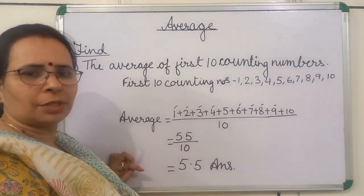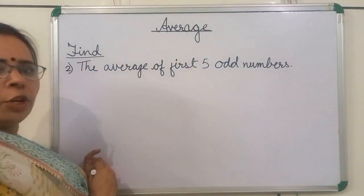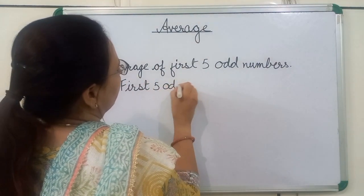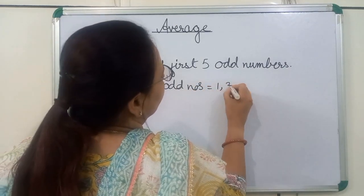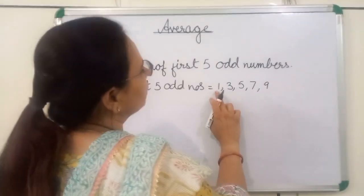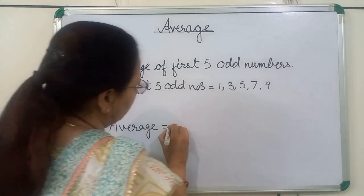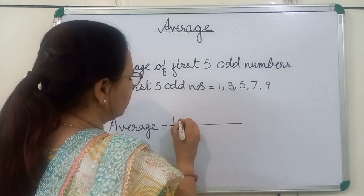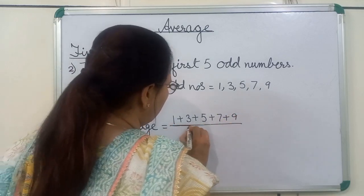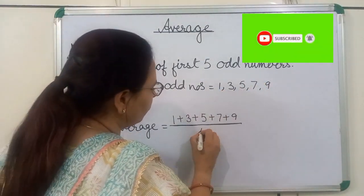Now, we will see the next question. Here, we will find the average of first 5 odd numbers. The first 5 odd numbers are 1, 3, 5, 7, and 9. Now, we will find the average of these numbers. Average is equal to sum of numbers upon sum of addends. So, how many addends are here? 5. We will write here 5.